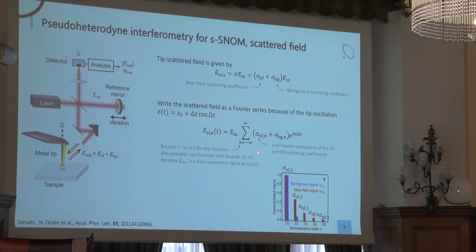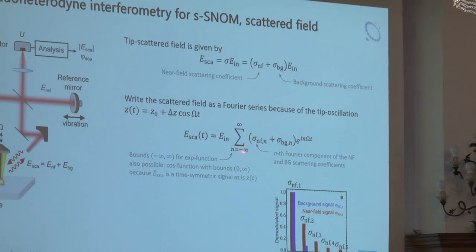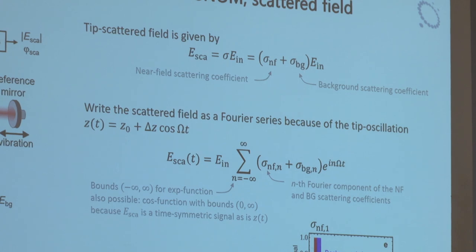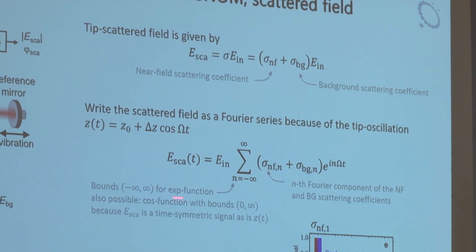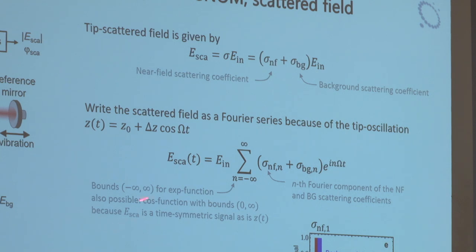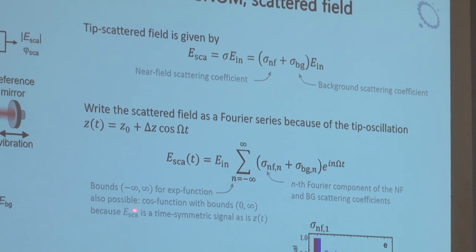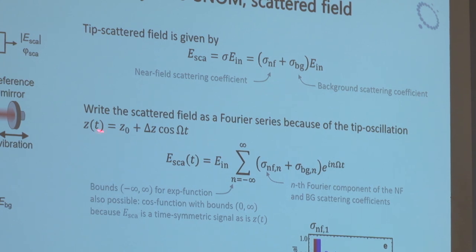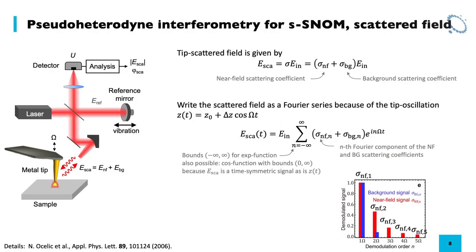I write the sum from minus infinity to plus infinity because I use an exponential function as a basis. In some papers you would also see a cosine function, in which case the bounds would be zero to infinity. This is only really valid when our scattered field is a time-symmetric signal. When you define a tip vibration like this, E-scattered becomes a time-symmetric signal. So this is our scattered field, as Ryan has shown already.